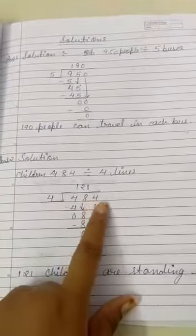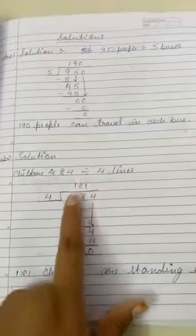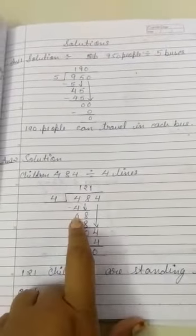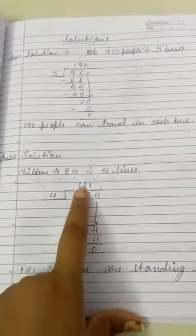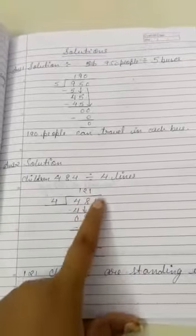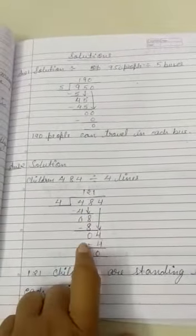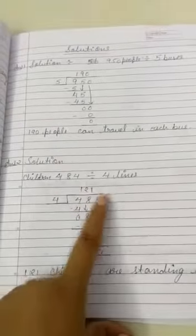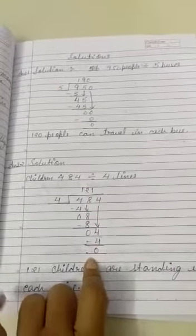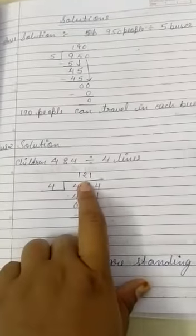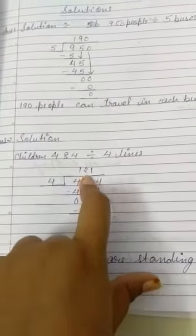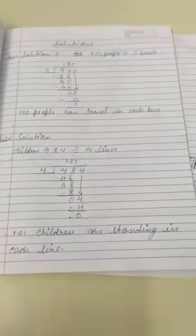484 divided by 4. Four ones are 4, subtract it, zero. Now 8, how many times? Two times. Four twos are 8. Now subtract this, again zero. Four ones are 4, again subtract this, zero.